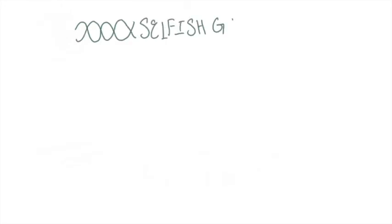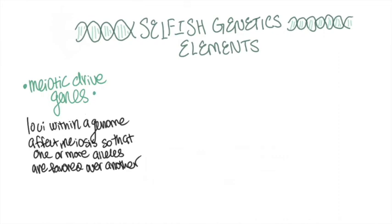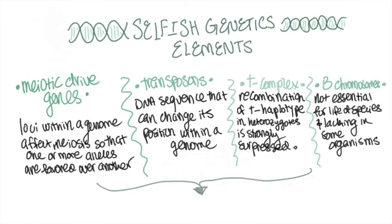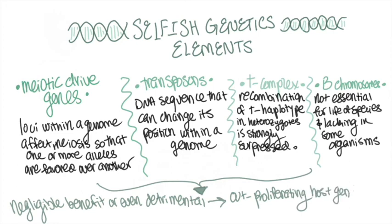Interestingly enough, recent research has shown that there are some forms of genes that do intentionally work against the best interest of their host, known as selfish genetic elements. Some examples include meiotic drive genes, transposons, the T-complex in mice, and B-chromosomes in plants, which are all either of no benefit to the host or even somewhat detrimental. They nevertheless persist due to their ability to drive their own selection — for example, by out-proliferating the host genome or by ensuring that cells failing to contain them are disadvantaged. In this way, these genetic elements are acting selfishly, because not only are they pushing their own propagation further, but they're doing it at the expense of their host organism, with evolution selecting for these genetic elements not because they support the fitness of the organism, but because they were able to out-compete their fellow genetic elements.